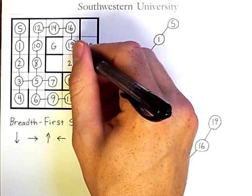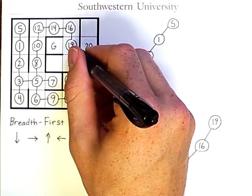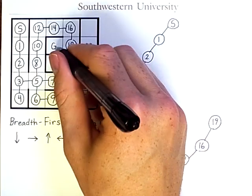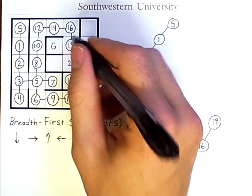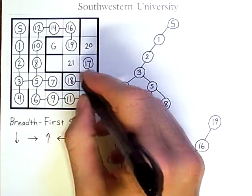Now, clearly, the state I will visit from nineteen is the goal state, but I have to go through these in order.